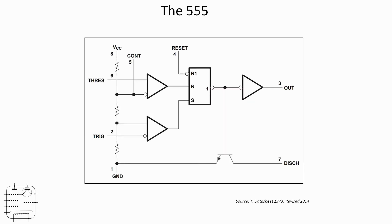Here courtesy of the TI data sheet is an internal circuit diagram. On the left hand side between pin 8 and 1, which is the power supply and ground, you can see there are three resistors forming a voltage divider. Depending on your source, those resistors were supposed to be 5k and that's why the chip is called the 555. Reading elsewhere, the designer said that's rubbish — it was picked because marketing thought it was a nice snappy number. Either way, it doesn't matter. What we've got is that voltage divider connected to a couple of comparators with inversions on some of the inputs.